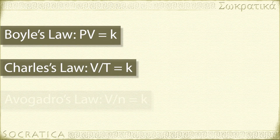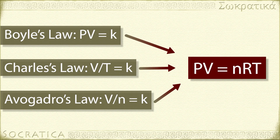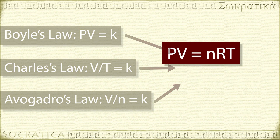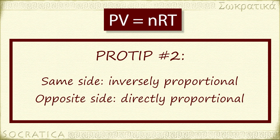If you put Boyle's law, Charles' law, and Avogadro's law together, you get the ideal gas law equation: PV equals nRT. Here we have one constant, R, the ideal gas constant, which is a combination of the constants from the other gas laws. The same relationships exist between the variables as in the simpler laws — pressure and volume are still inversely related, volume and temperature are still directly related. Remember that values on the same side of the ideal gas law equation are inversely proportional to each other when you hold all the other variables constant, and values on opposite sides of the equation are directly proportional to each other when the other variables are held constant.